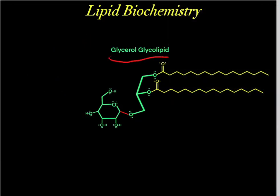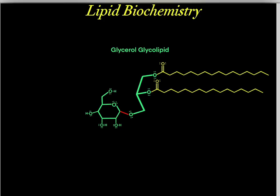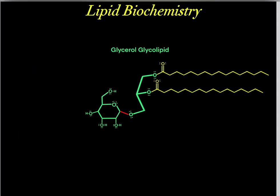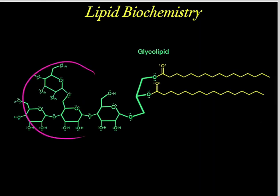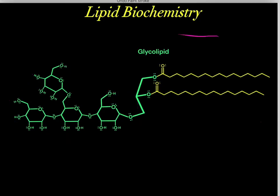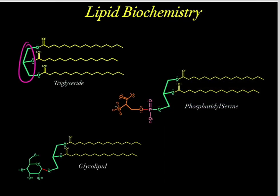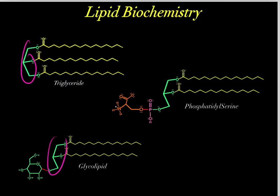So now we form our glycerol glycolipid. We don't always stop there — we can add more carbohydrates through a very similar mechanism, forming different types of glycolipids. Depending on the types of carbohydrates you add determines the type of glycolipid you form. So we can see there are many different types of glycerol-based backbone lipids.